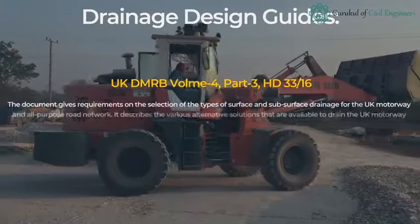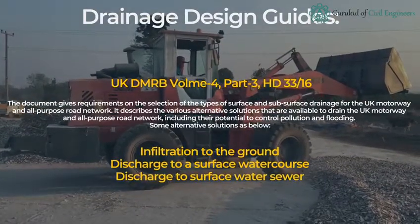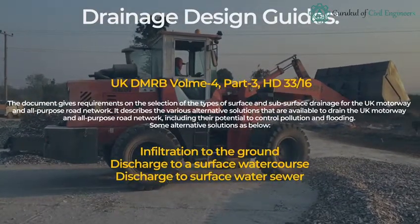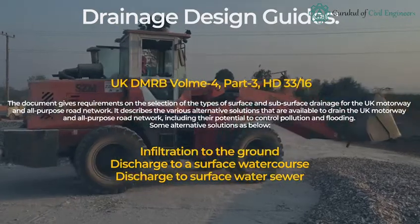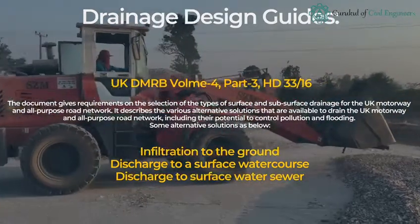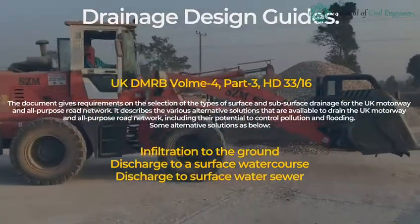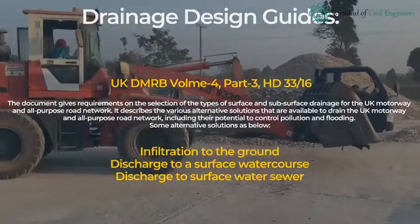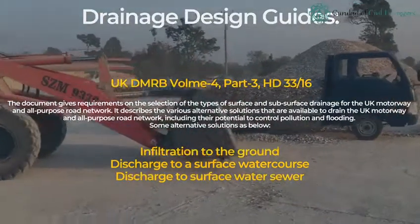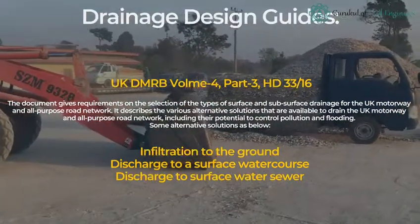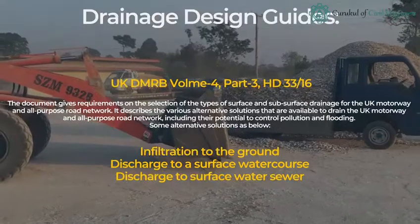The document gives requirements on the selection of types of surface and subsurface drainage for the UK motorway and all-purpose road network. It describes the various alternative solutions available to drain the UK motorway and all-purpose road network, including their potential to control pollution and flooding.